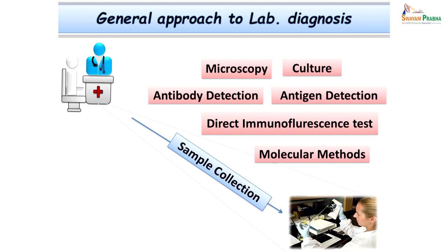Sample collection — the type, time of collection, and method of collection — forms a very important component and determines the success of laboratory diagnosis in all cases of genital infections. Not only sample collection is important, but how we transport the specimen is also equally important. Because these organisms are usually very delicate, immediately after collection the samples need to be transported to the laboratory without any further delay.